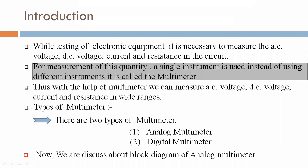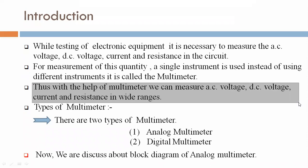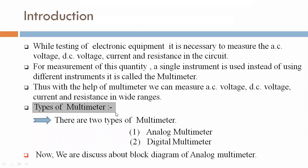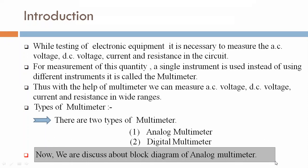With the help of a multimeter, we can measure AC voltage, DC voltage, current, and resistance in a wide range. There are two types of multimeters available: analog multimeter and digital multimeter. Now we will discuss the block diagram of the analog multimeter.